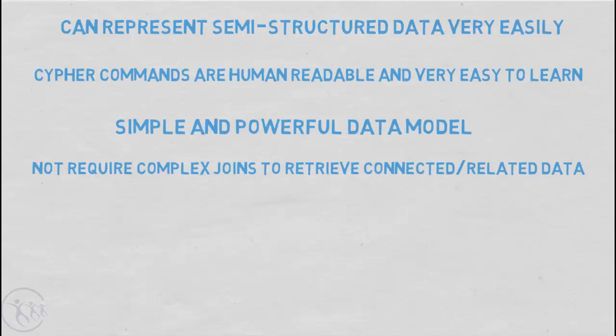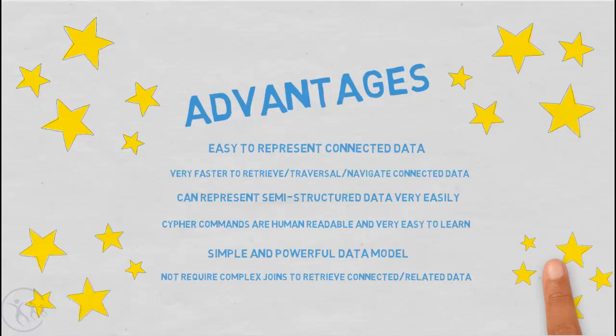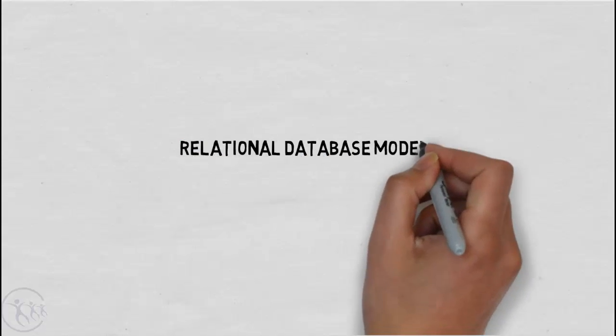Unlike the relational model, there's no need for complex and costly joins to retrieve connected or related data. Instead, the graph database uses a natural concept of relationships. Relationships in a graph naturally form paths. Querying or traversing the graph involves following those paths. And because of the path-oriented nature of the graph data model, the majority of path-based operations are extremely efficient. So let's look at that in a bit more detail. Because here is where the true strength of graph databases lie.